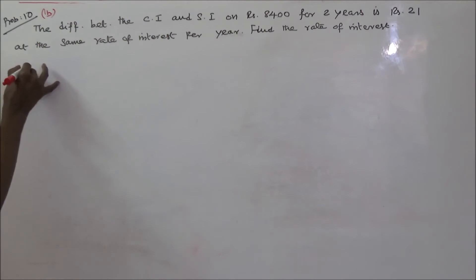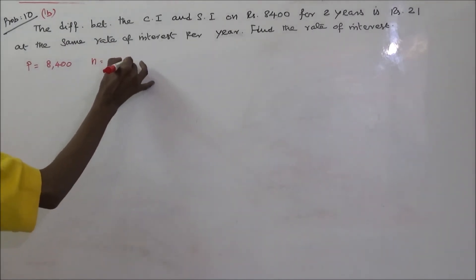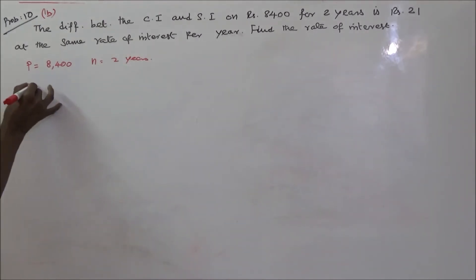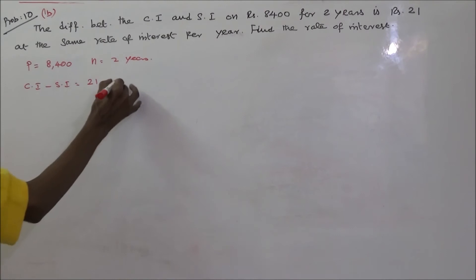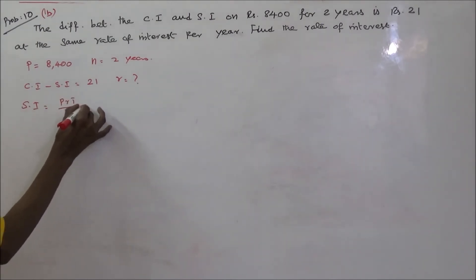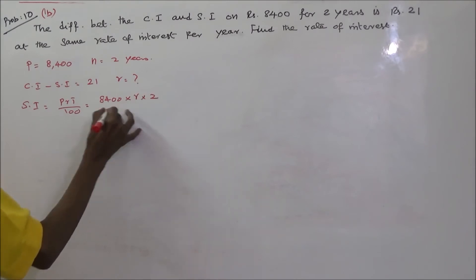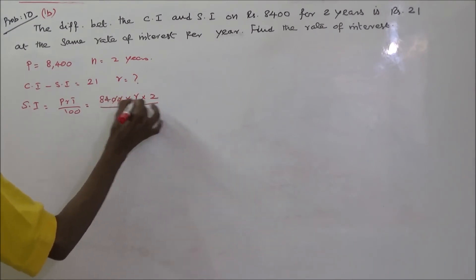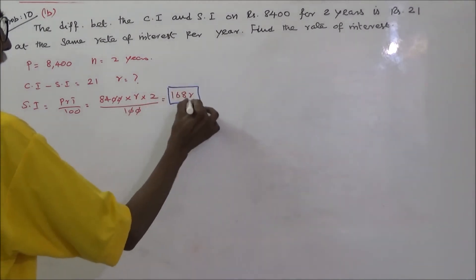Here P is given: P equals 8,400, n equals 2 years, and the difference between compound interest and simple interest equals Rs. 21. We need to find R. First, calculate simple interest: SI equals P into R into T divided by 100, which is 8,400 into R into 2 divided by 100. This gives SI equals 168R.